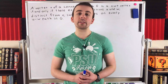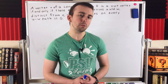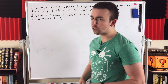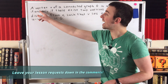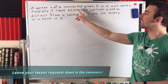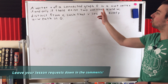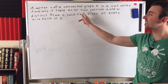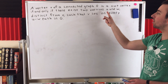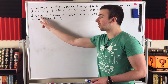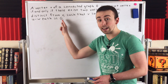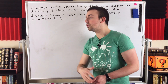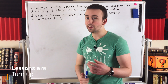Hey everyone, in today's Wrath of Math lesson, we'll be proving this pretty straightforward characterization of cut vertices. A vertex V of a connected graph G is a cut vertex if and only if there exist two vertices U and W that are distinct from that cut vertex V, such that V lies on every UW path in G.